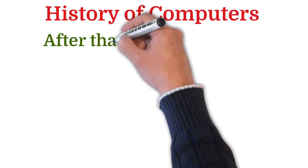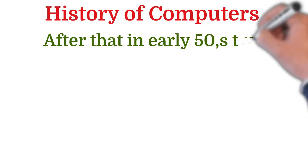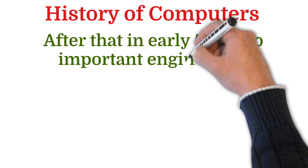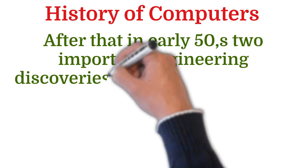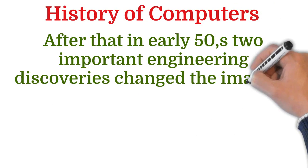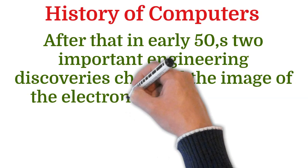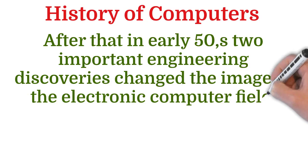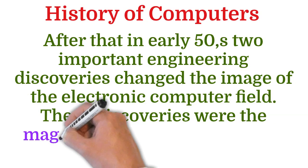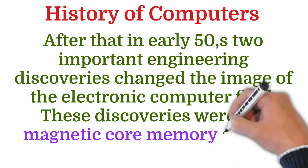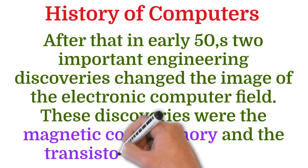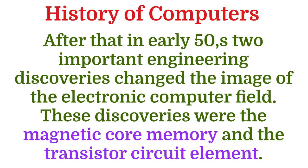In the early 1950s, two important engineering discoveries changed the image of the electronic computer field. These discoveries were the magnetic core memory and the transistor circuit element.